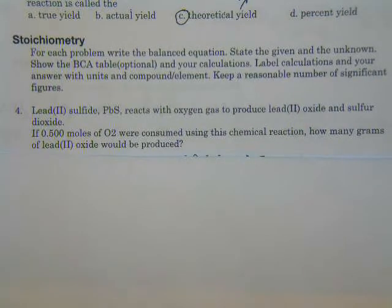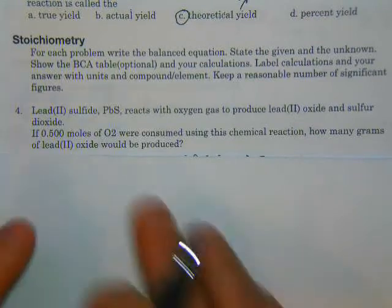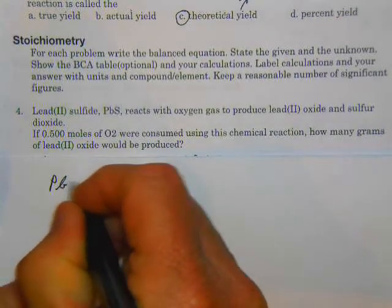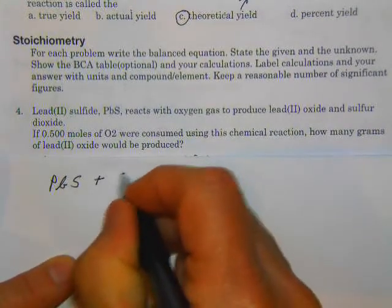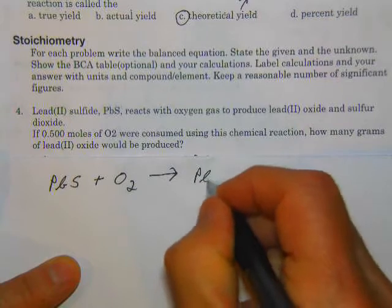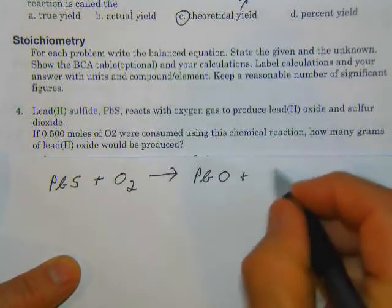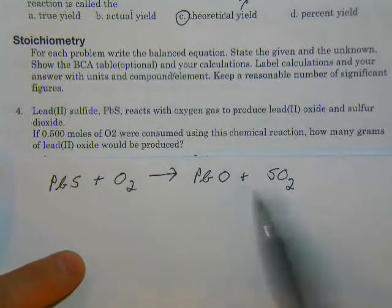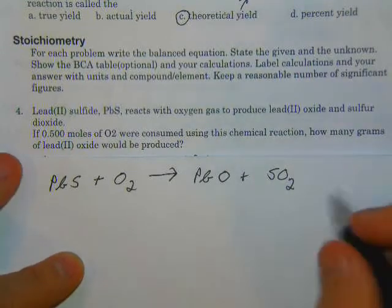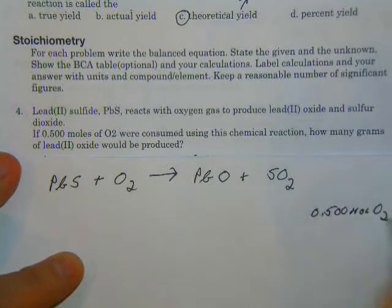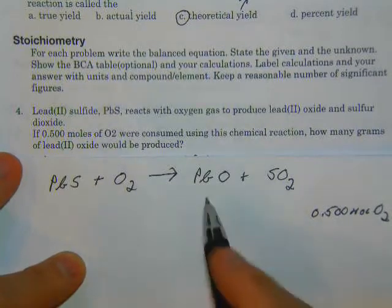So let's look at the first one here. We've got lead 2 sulfide, and why don't we go ahead and write the formula as we go through this. So we've got lead 2 sulfide, PbS, and it reacts with oxygen gas, and we know oxygen is diatomic, to produce lead 2 oxide, so it's PbO, and sulfur dioxide, that's SO2. And it says that 0.500 moles of O2 were consumed, so we're going to use all that up, how many grams of lead 2 oxide would be produced?